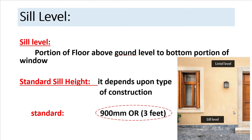So let's talk about sill level. Sill level is similar to the sill height we just discussed. Sill level is actually the portion of the floor above the ground level to the portion of the window. If you talk about its specification, the standard sill level is kept as 3 feet. This is almost the same as sill height, but here we are talking about the levels from the ground to the portion of the window. It also depends on the type of construction and the type of structure.